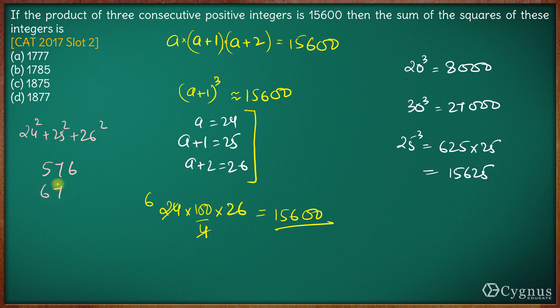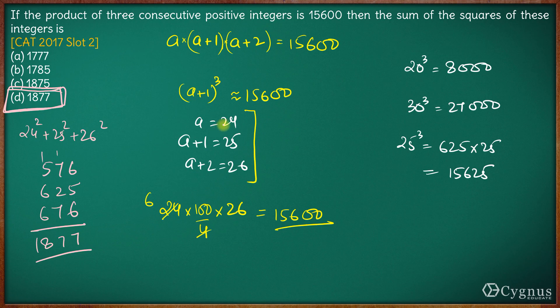So the sum here comes out to be 1877. Hence the answer to this question is option D, 1877.